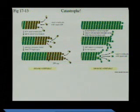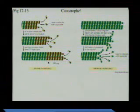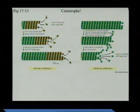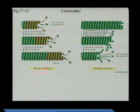After that GTP-bound tubulin is incorporated into the microtubule, it is hydrolyzed. So we have GDP — the diphosphate tubulin — present down here. The little red dots are supposed to show our triphosphate, and without those is the diphosphate tubulin.